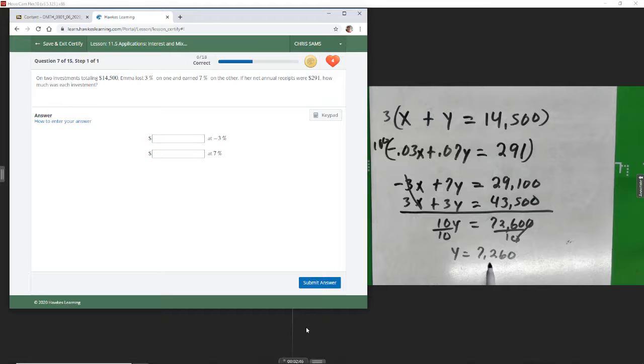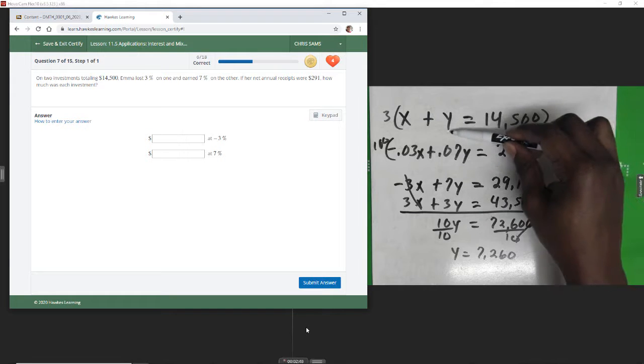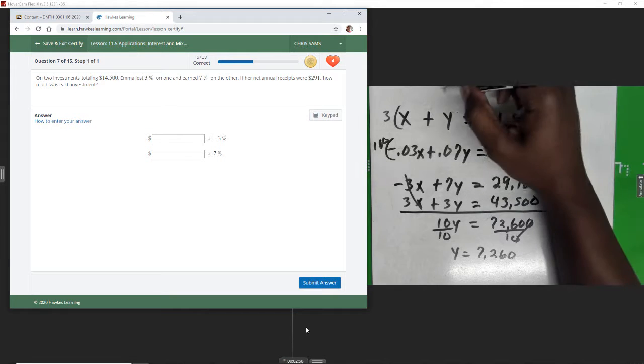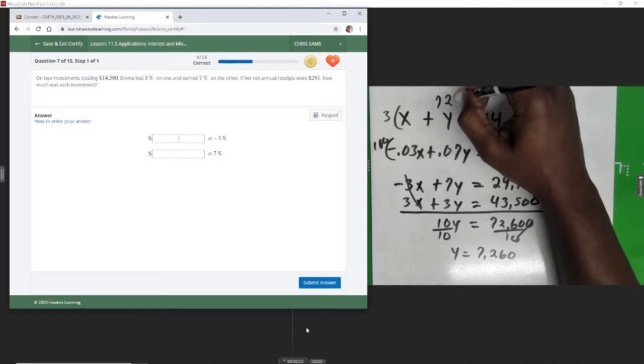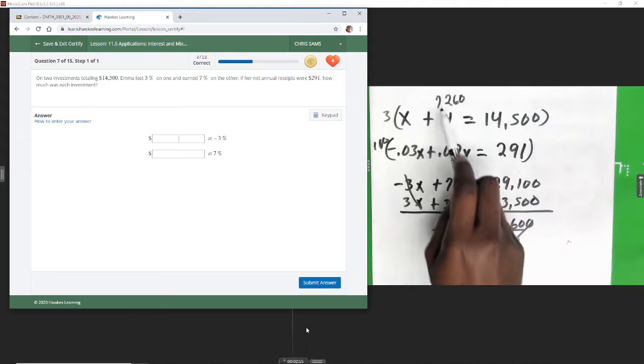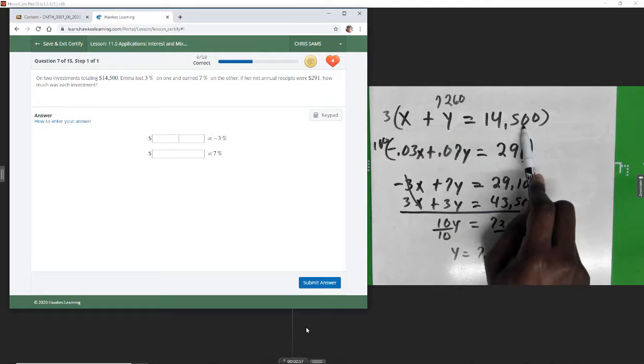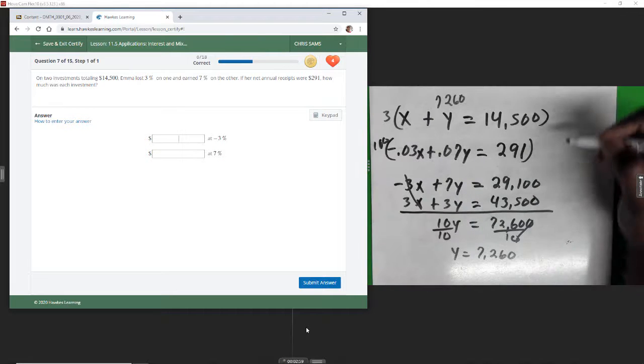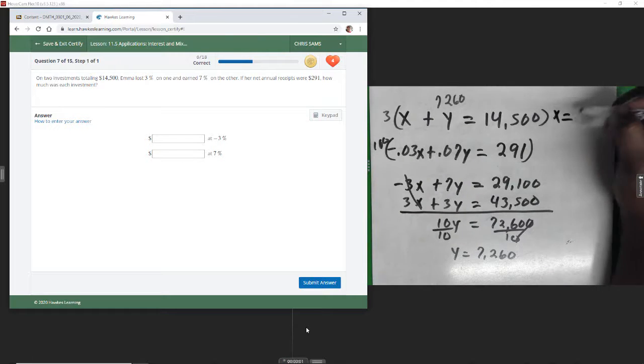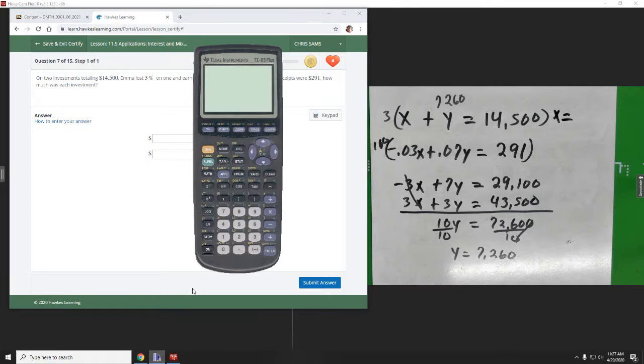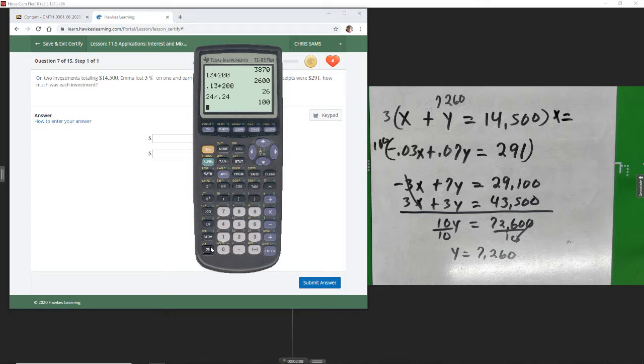Now we're going to take and replace y in our original equation, so we have $7,260 here. We will subtract from this and that will leave us with x. So we get x equals, doing that math, we're going to take our $14,500 and subtract $7,260.